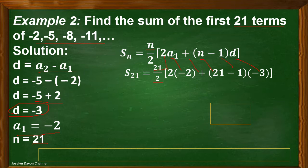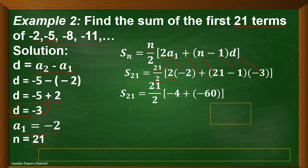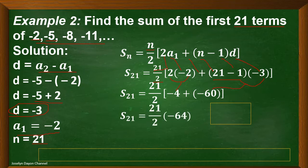Simplify further. 21 divided by 2 equals 10.5 — you may write it as a fraction, 21 over 2. Then 2 times negative 2 equals negative 4. And 21 minus 1 equals 20, times negative 3 equals negative 60. Simplify further: copy 21 over 2, then add negative 4 plus negative 60 to get negative 64.